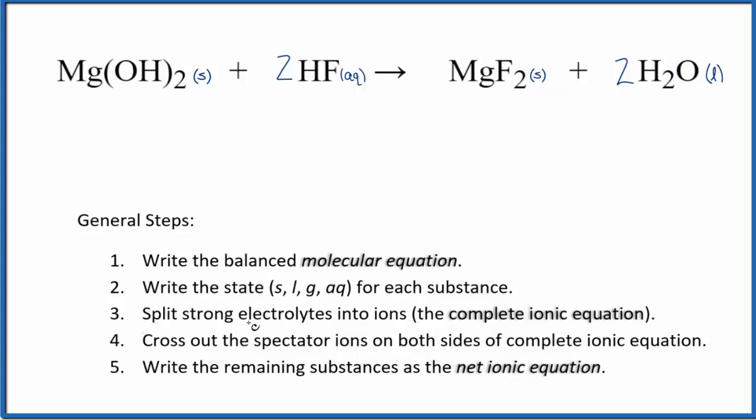Now we can split the strong electrolytes apart into their ions to give us the complete ionic equation. We don't split solids apart, and this HF is a weak acid—a weak electrolyte—so we're not going to split that apart either. So really, when you look at the equation here, this is also the balanced net ionic equation, because we can't split the magnesium hydroxide or the magnesium fluoride since those are solids. We don't split the weak electrolyte HF apart, and we don't split liquids apart either. So we're done.